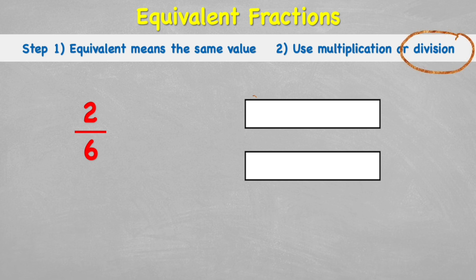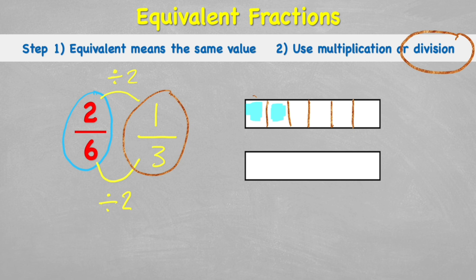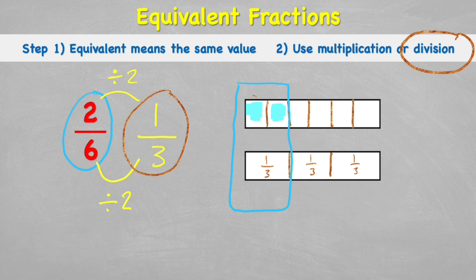We've only looked at multiplication so far — let's use division to find equivalent fractions too. Starting with two sixths: let's divide the numerator by two, so two divided by two equals one. Whatever I did to the numerator I do to the denominator: six divided by two equals three. So I think one third is an equivalent fraction. On the chocolate bar cut into thirds, we can see that one third covers the same area as two sixths — they are equivalent.